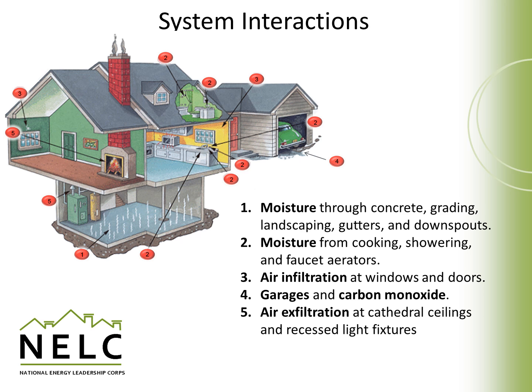Exfiltration — which refers to air escaping the house rather than infiltrating it — can take place as heat gathers in cathedral ceilings, and that heat will tend to drive outside and escape the house. Recessed light fixtures are also a very common source of losing heat inside a home, which we'll talk about in more detail a little bit later.